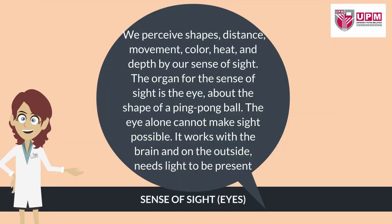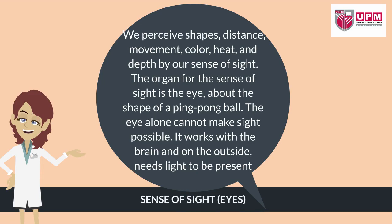Now we look at the sense of sight. We perceive shapes, distance, movement, color, heat, and depth by our sense of sight. The organ for the sense of sight is the eye, about the shape of a ping pong ball. The eye alone cannot make sight possible — it works with the brain, and on the outside needs light to be present.